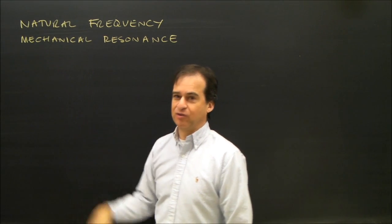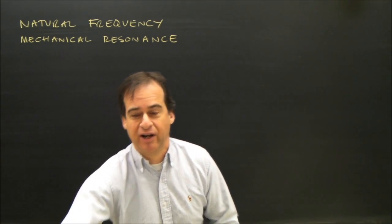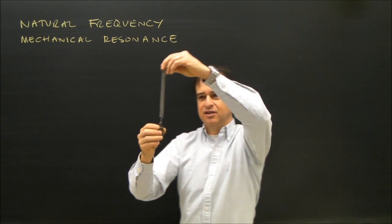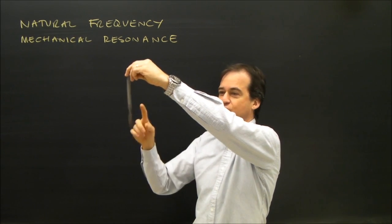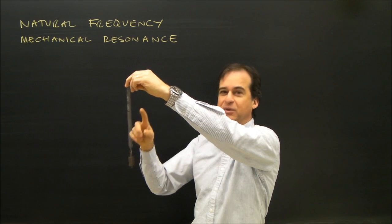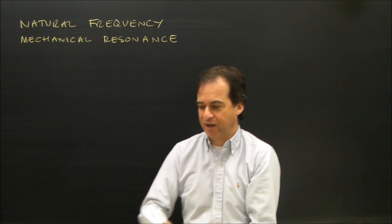So we're talking about natural frequency or mechanical resonance. Many objects have a natural frequency they will vibrate at. For example, this spring with a weight on it will go up and down with a certain frequency, meaning it will do it so many times in one second. That's the frequency you could say it likes to vibrate at.